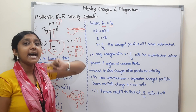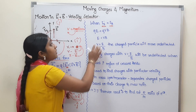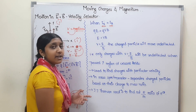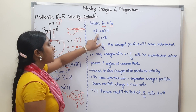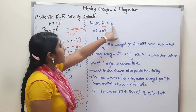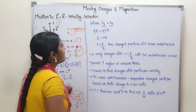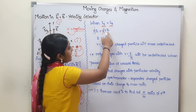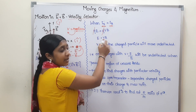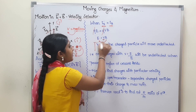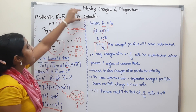The electric field creates a force and the magnetic field creates a force — equal in magnitude but opposite in direction. The electric force is QE, and the magnetic force is QVB. If we set them equal: QE equals QVB, we cancel Q — so E equals VB, which gives V equals E by B. This is the velocity selector.